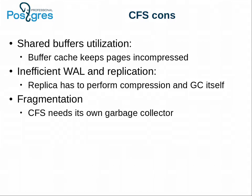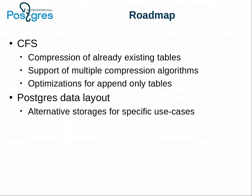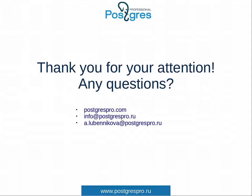Here is our roadmap. We have things to improve for the next releases of Postgres Pro, and we will probably try to submit CFS to Postgres core — though I'm not sure whether it will be version 10 or the next one. There are also a lot of things to try to improve inside PostgreSQL core, such as improved data layout for specific use cases like read-only data, fixed-length data, and tricks for indexes. That is all — thank you for your attention. Any questions?